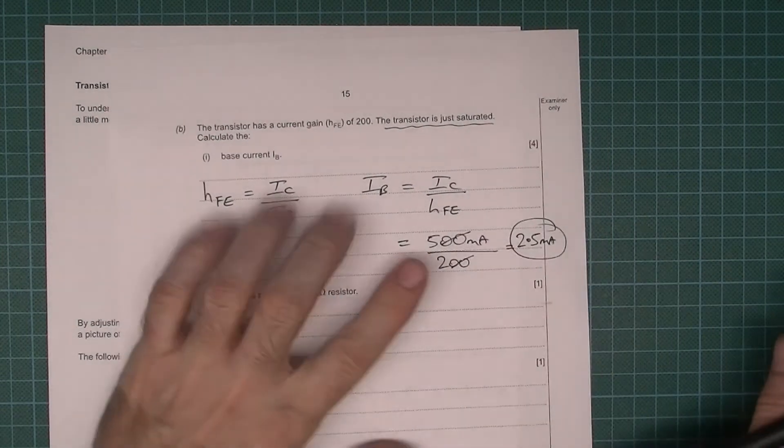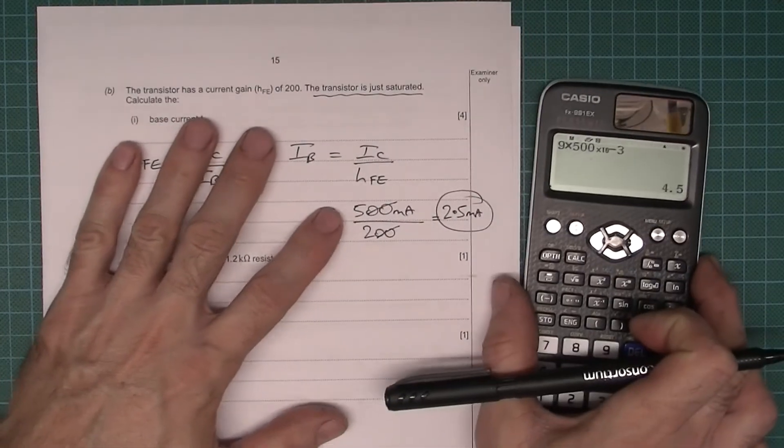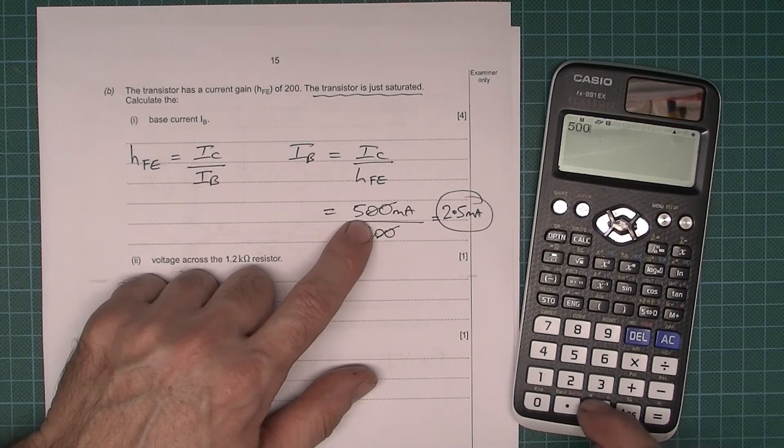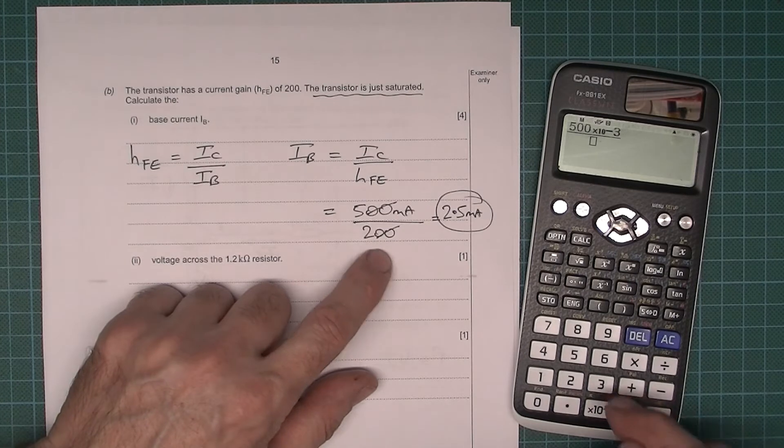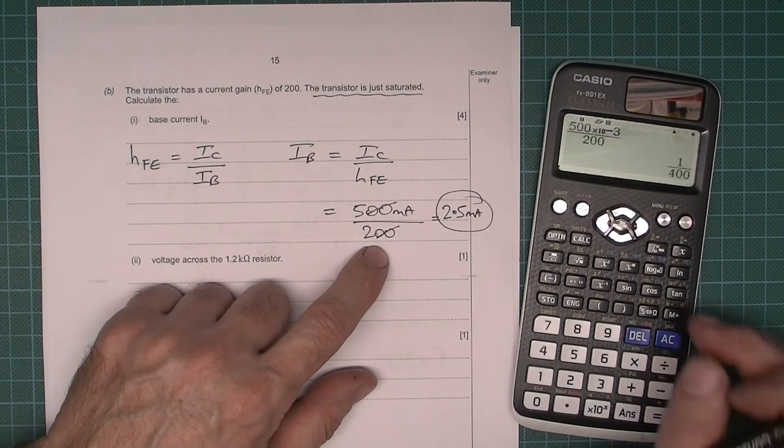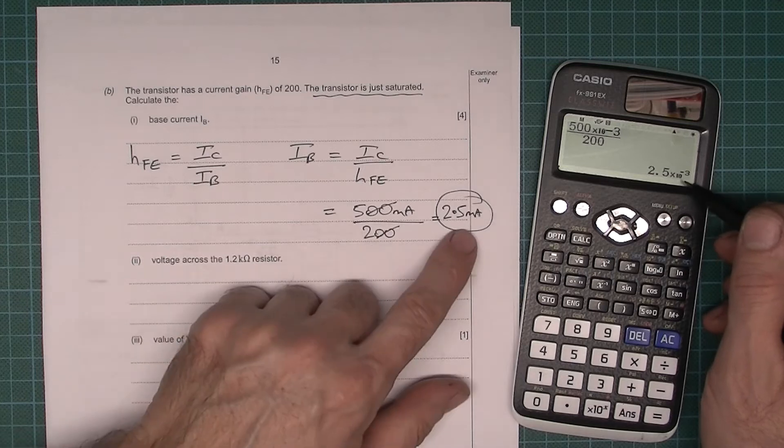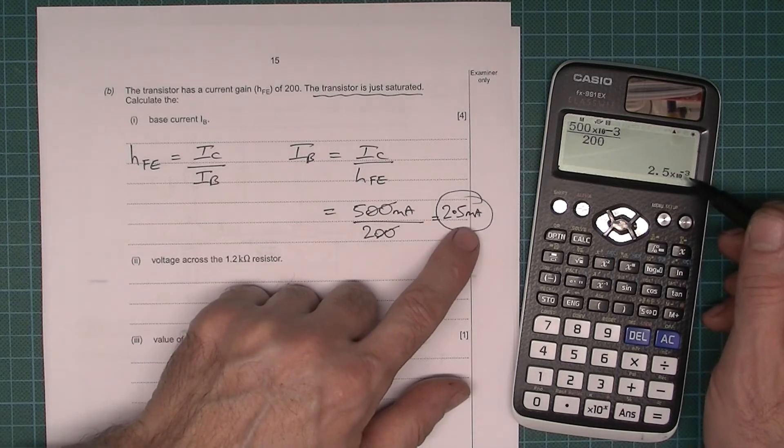If you don't like doing the cancelling, if you just want to type it all into the calculator for whatever reason, you could just do that at 500 times 10 to the minus 3 and put that over 200, and 2.5 times 10 to the minus 3, which is milli.